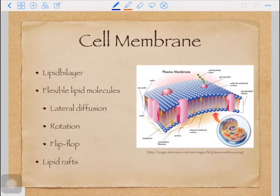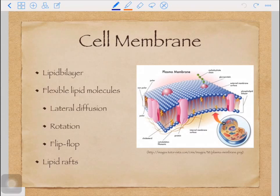Before we talk about hydropathy plot, let's review what cell membrane looks like. As you can see in this cartoon, the cell membrane is mainly made up of sperm-like lipid molecules. These lipid molecules are very flexible and they generally have three types of motions.